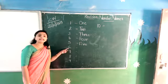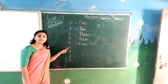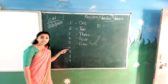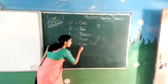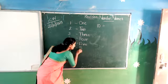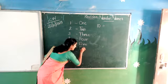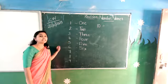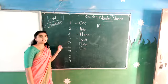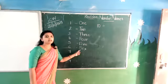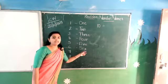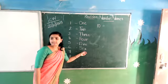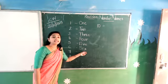Number 6. The spelling of 6 is? S-I-X — 6. S-I-X — 6.